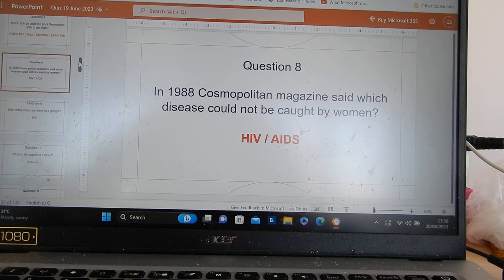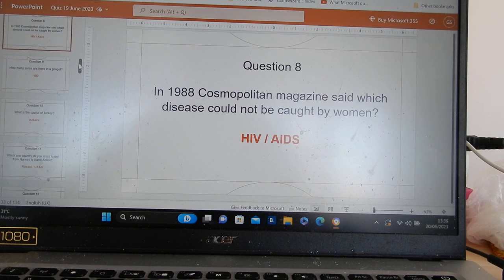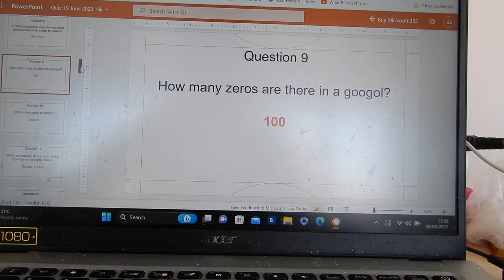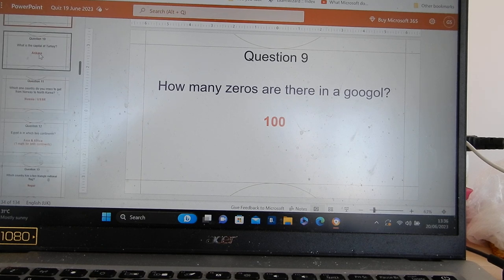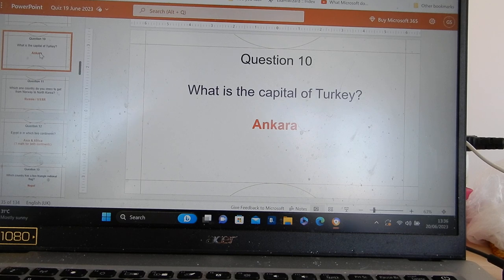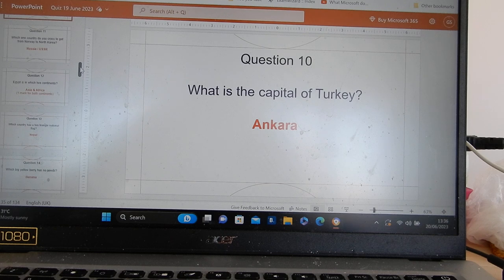HIV and AIDS. Cosmo of Olsen said women could not get it. There's a hundred zeros in a Google. One with a hundred zeros. The capital of Turkey is Ankara. But the capital of Brazil is Brasilia.